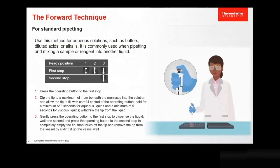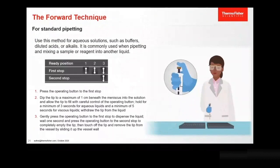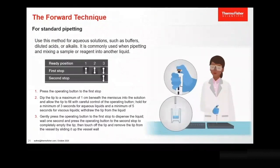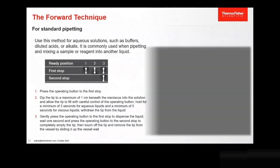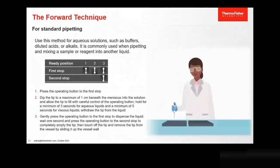Gently press the operating button to the first stop to dispense the liquid. Wait one second and press the operating button to the second stop to completely empty the tip. Then touch off the tip and remove the tip from the vessel by sliding it up the vessel wall.